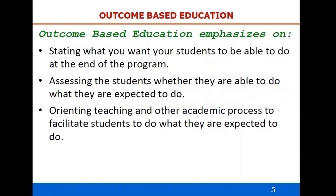Outcome based education mainly emphasizes on stating what you want your students to be able to do at the end of the program, course, or instructional unit. Then assessing the students — whether they are able to do what they are expected to do. Finally, orienting teaching and other academic processes to facilitate students to do what they are expected to do. These are all the main factors where OBE is focused.